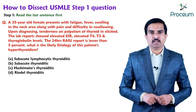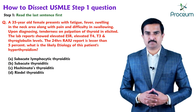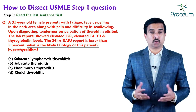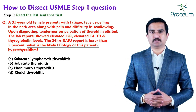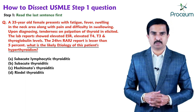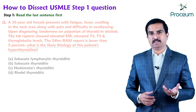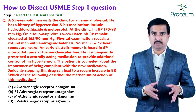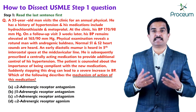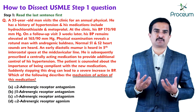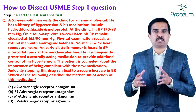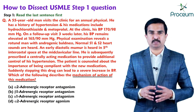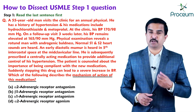For example, if the last sentence reads 'What is the likely etiology of this patient's hyperthyroidism?' you have a great first look into what the stem will be about. If the last sentence reads 'What is the mechanism of action of this newly added medication?' then you have a pharmacology question, which can save you lots of time — read one to two sentences up from the last sentence, find the drug, and answer the question.